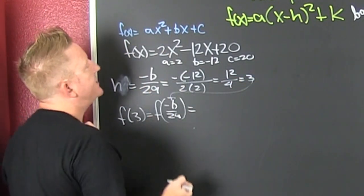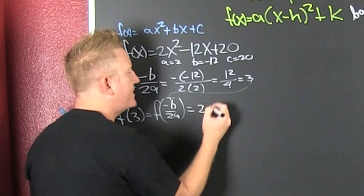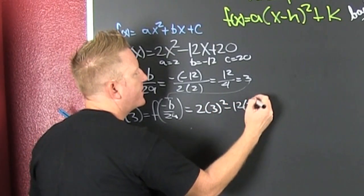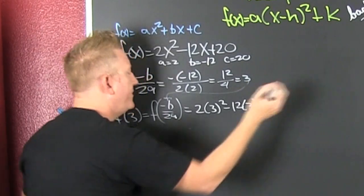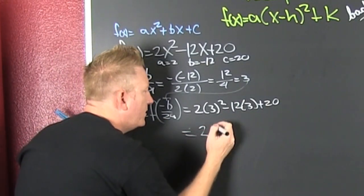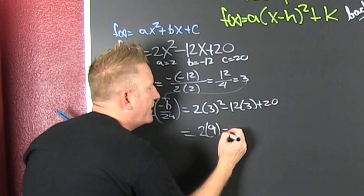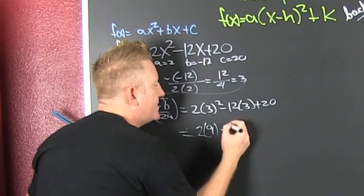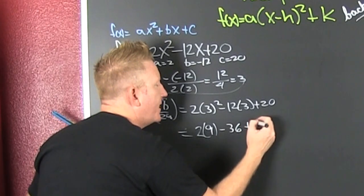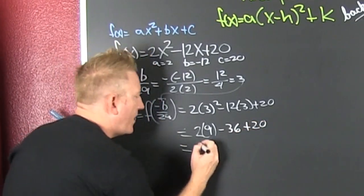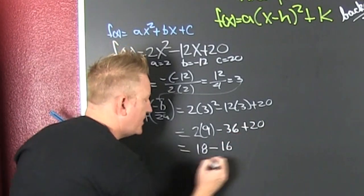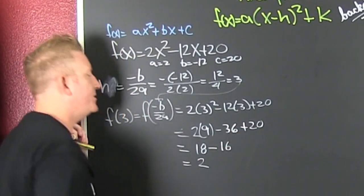So f of 3, everywhere I see an x, I'm going to put a 3. That's 2 times 3 squared minus 12 times 3 plus 20. That's a 9, and then minus 12 times 3 is 36 plus 20. So we have 18 and then that's minus 16, which is a positive deuce.